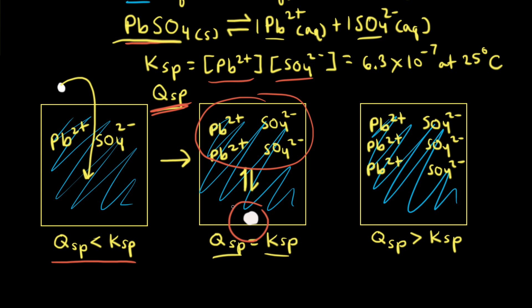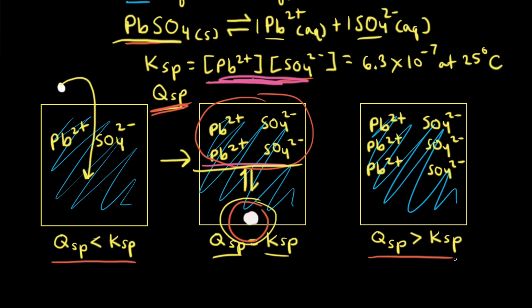Since the rate of dissolution is equal to the rate of precipitation when the system is at equilibrium, the concentrations of lead two plus ions and sulfate ions are constant. This represents a saturated solution. Since the solution is saturated at equilibrium, if we tried to add more lead two sulfate at the same temperature, we wouldn't be able to dissolve anymore — we would just increase the pile of lead two sulfate on the bottom of the beaker.